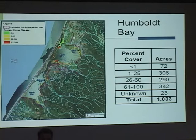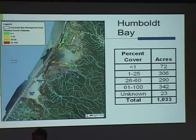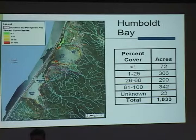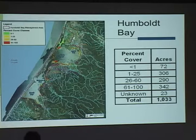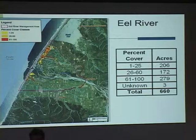Recently the refuge completed mapping Spartina distribution throughout the management area. In addition to gathering information on the distribution of Spartina, they obtained information about percent cover in various cover classes. In Humboldt Bay we now know there's a little over a thousand acres — all Spartina densiflora — pretty evenly distributed among the different percent cover classes. There's also a substantial amount of Spartina in the Eel River estuary, about 660 acres, distributed among low, medium, and high cover classes.